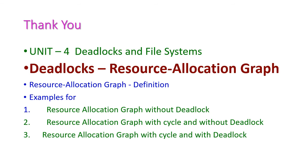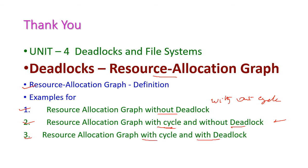Up to this, we have seen the resource allocation graph. In this class, we have seen the definition of resource allocation graph and three examples: first, resource allocation graph without deadlock — that is, without cycle; second, resource allocation graph with cycle but without deadlock; and third, resource allocation graph with cycle and with deadlock. In the next class, we will see another important topic from the fourth unit on deadlock.